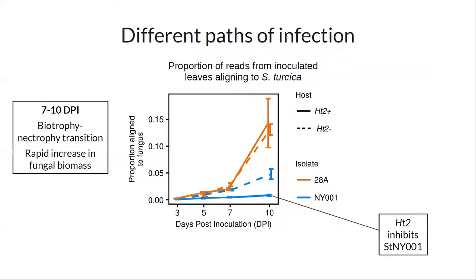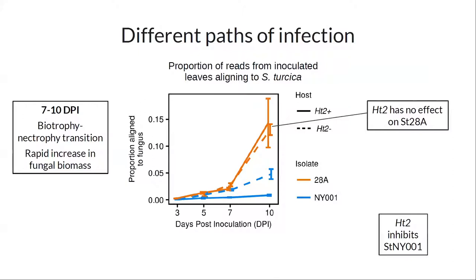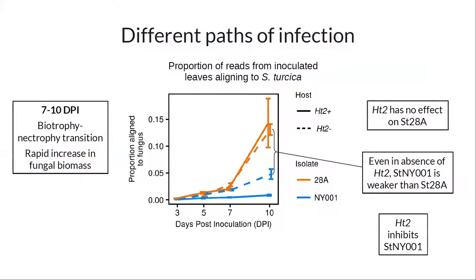HT2 is inhibiting the growth of New York 1 because New York 1 has the recognizable form of the AVR HT2 locus — the wild type. HT2 does not have an effect on the 28A isolate, which carries the non-recognizable form. Interestingly, 28A is essentially a better pathogen — it's more vigorous. Anyone who's worked with these two isolates has noticed that. So we can also ask: what does a host responding to a weak versus a strong pathogen look like? These isolates in a lot of genes and portions of the genome are 100% identical.